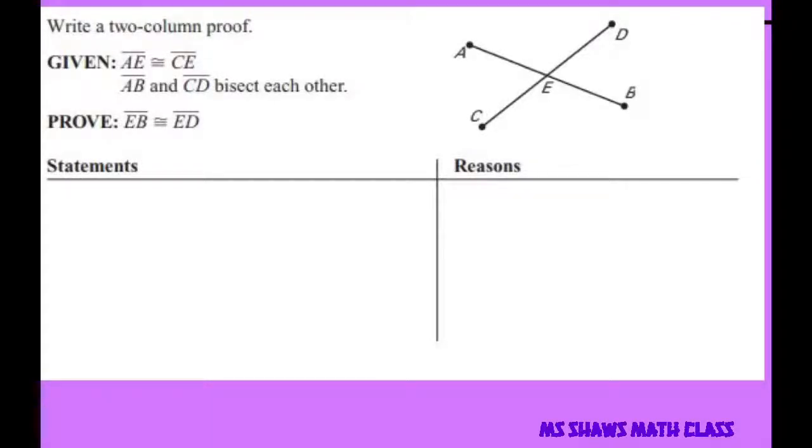Hey everyone! We're going to write a two-column proof given that line segment AE is congruent to CE. So AE is right here and CE is here, and that AB and CD bisect each other.